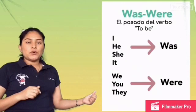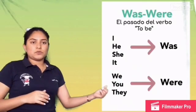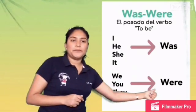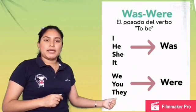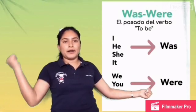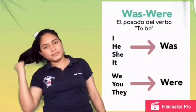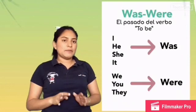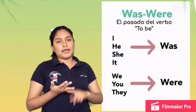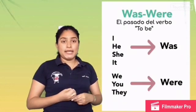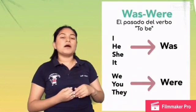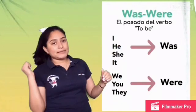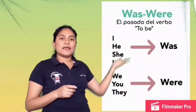But if you use we, you, and they, you have to use 'were'. We, you, or they were at home yesterday. It's similar to 'there is', 'there are', or 'is', 'am', 'are' — but this is the verb 'to be' in the past: was and were.